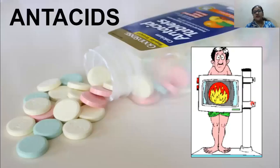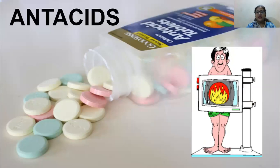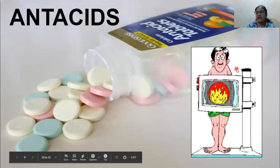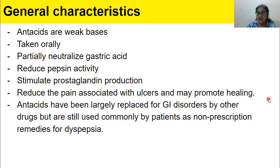The first drug class is antacids. As shown in the picture, a man is holding something against a fire — the fire represents the intense acidic situation the person is suffering from. This is an unease that many experience, especially after eating heavily or fatty/meaty foods.